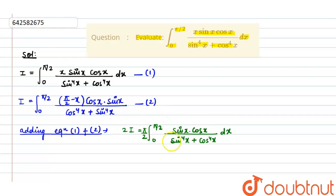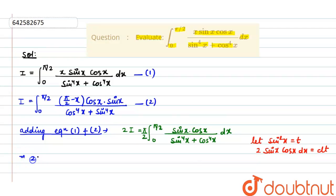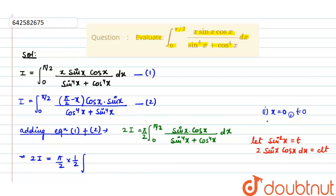To solve this integral, we let sin²(x) = t. Differentiating using the chain rule, we get 2·sin(x)·cos(x) dx = dt. Now we change the limits: when x = 0, sin(0) = 0, so t = 0. When x = π/2, sin(90°) = 1, so t = 1. The limits change to 0 to 1.